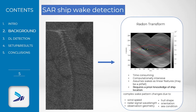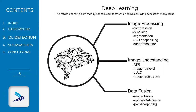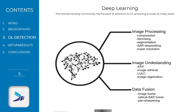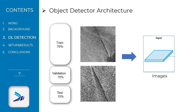In contrast to this, we propose a deep learning methodology. Deep learning for remote sensing has achieved great success in many tasks. In the framework of automatic target recognition, the architecture used is the object detector, which takes input images.